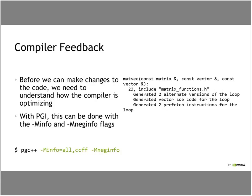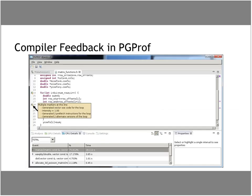The compiler feedback on the right shows information for the MATVEC function: it was located in matrixfunctions.h at line 23, and it tells us some of the optimizations performed on the loop. Even more useful is viewing this back in PGPROF — hovering over the small arrow in the source code tells you that the loop at line 18 generated vector instructions and some prefetching. So it tells you both what the compiler did and sometimes what it couldn't do.